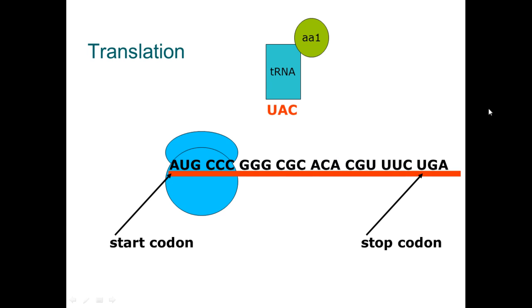Now there is this other molecule that we have up here called transfer RNA. What that is going to do is it has a very specific code. This transfer RNA has a very specific code, in this case UAC.